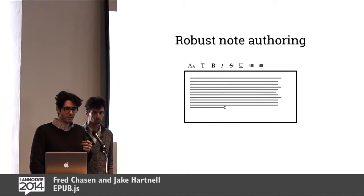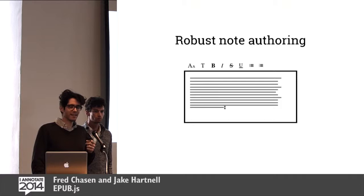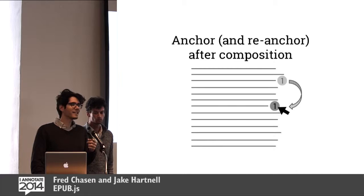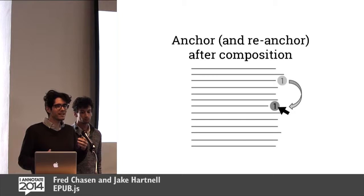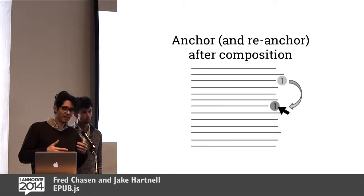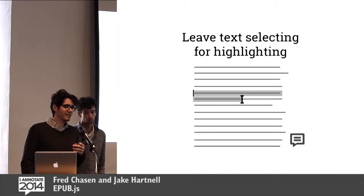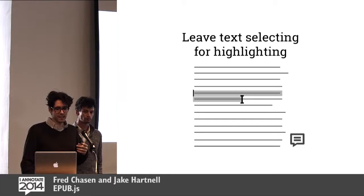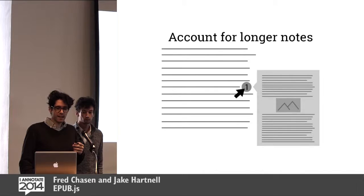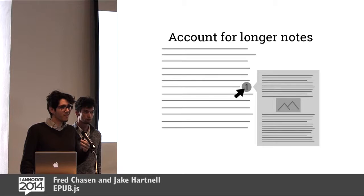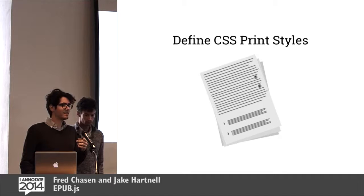We have some suggestions for reading platforms. First, use robust note authoring — allow images, links, markdown, and nice formatting. Second, anchor and allow re-anchoring of text, because you might get three pages later and realize part of something is referenced in the note you were trying to make. Leave text selection for highlighting, using other actions like double-clicking or notes in the sidebar or toolbar to create notes. Allow longer notes — once we have these rich tools, we have to be able to display notes that might be several pages long. And finally, CSS print style sheets for notes so they can be printed with the document and truly live with the text.